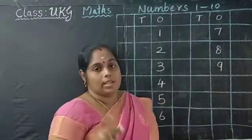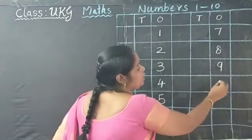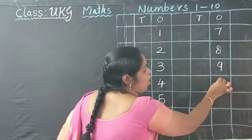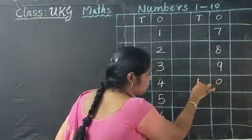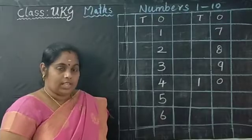1, 0, 10. Put 0 in ones box and 1 in tens box. Once again.